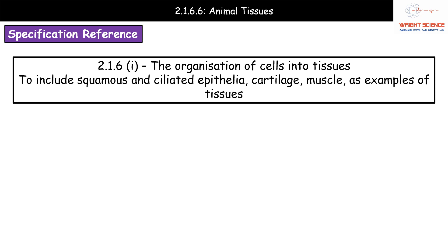Hi everyone and welcome to our video on animal tissues. This is part of our module 2 part 6 series looking at cell division, cell diversity and cell differentiation. In this video we're going to be having a look at specification reference 2.1.6i, the organisation of cells into tissues.